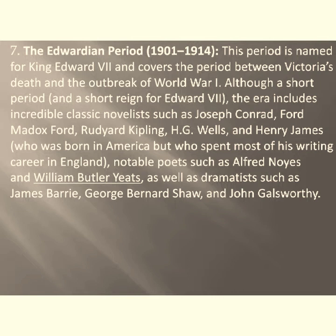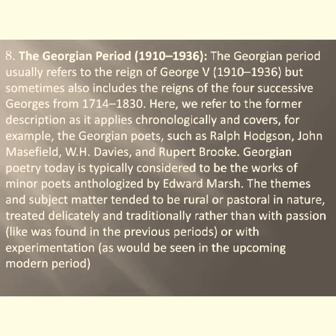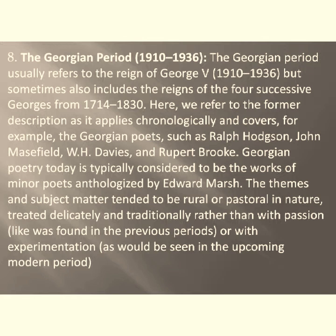The Georgian period usually refers to the reign of George V, but sometimes also includes the reigns of the four successive Georges from 1714 to 1830. Here we refer to the former, which covers the Georgian poets such as W.H. Davies, John Masefield, Ralph Hodgson, and Rupert Brooke. Georgian poetry is typically considered the works of minor poets anthologized by Edward Marsh. The themes and subject matter tended to be rural or pastoral in nature, treated delicately and traditionally rather than with passion or experimentation.